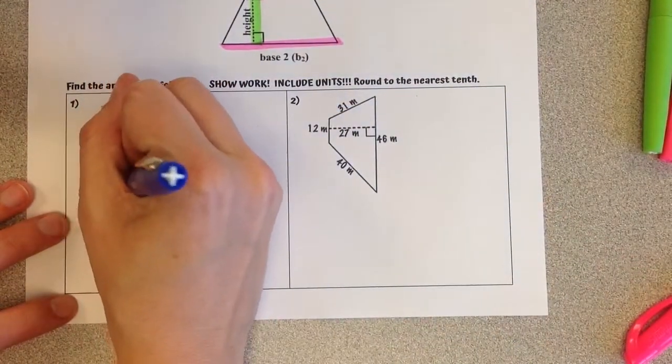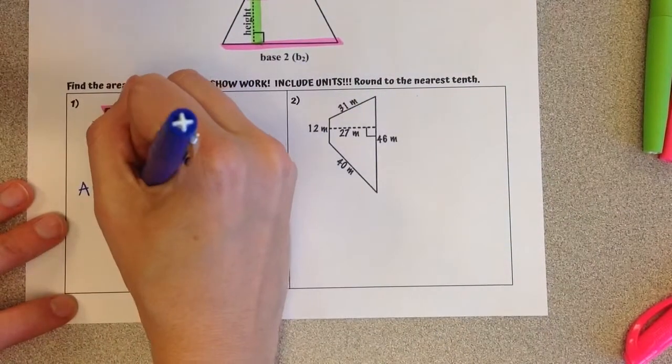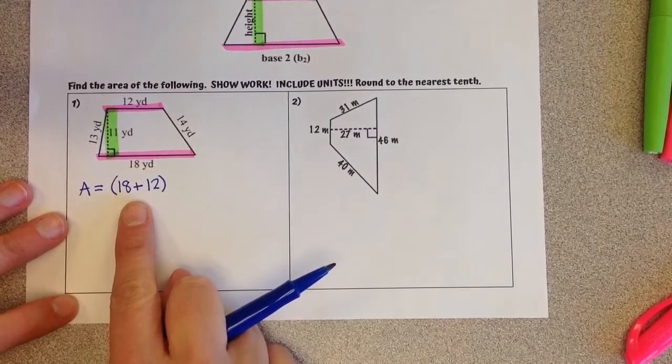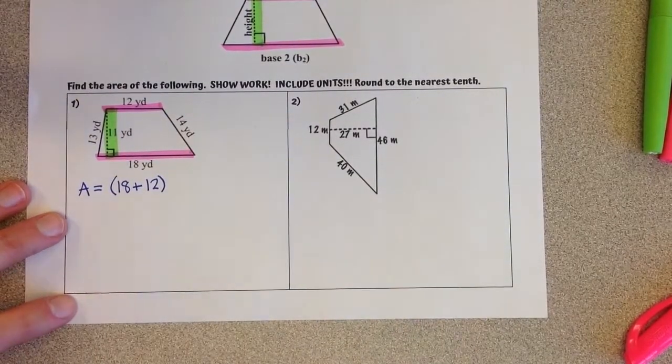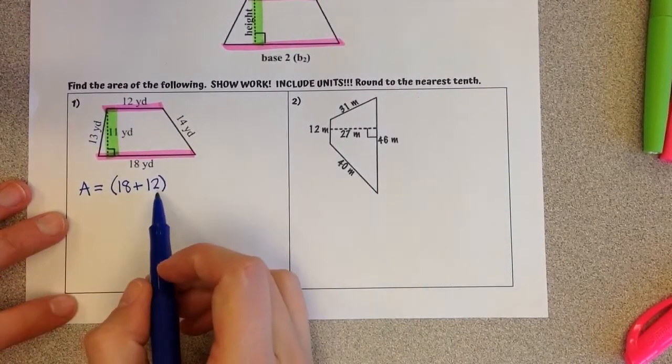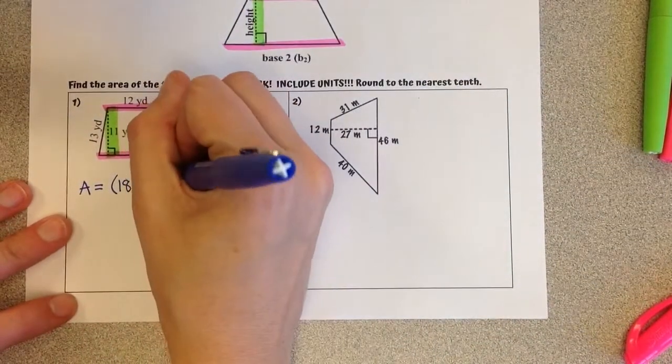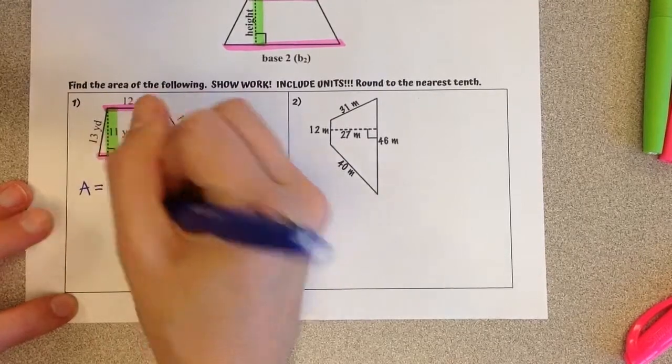So my base 1, 18, plus my base 2, 12. Does the order matter there? No, because remember with addition, it's commutative, the order can be flipped around. I'm multiplying that by our perpendicular height, which is 11, and I'm dividing that by 2.